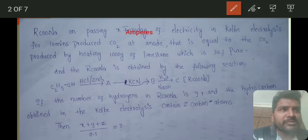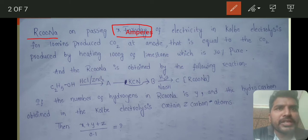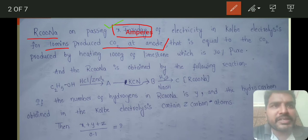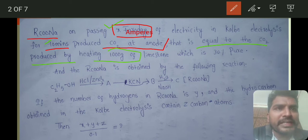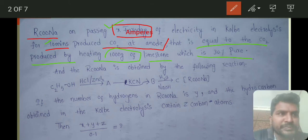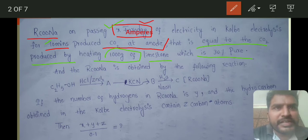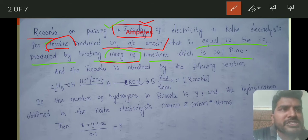This is the problem we are going to discuss. When X amperes of electricity is passed for 10 minutes, it produces carbon dioxide at the anode equal to the carbon dioxide produced by heating 1000 grams of limestone which is 30% pure. There is RCOO-Na — on passing X amperes of current in Kolbe electrolysis for 10 minutes — carbon dioxide is produced at the anode. The carbon dioxide obtained is equal to the carbon dioxide produced by heating 1000 grams of limestone which is 30% pure.